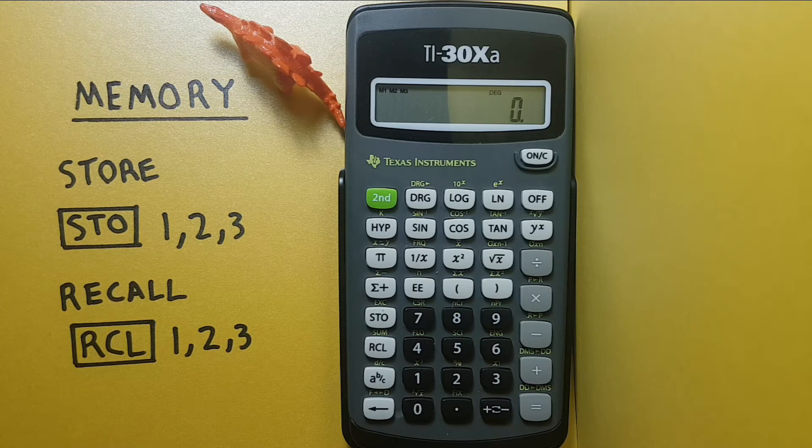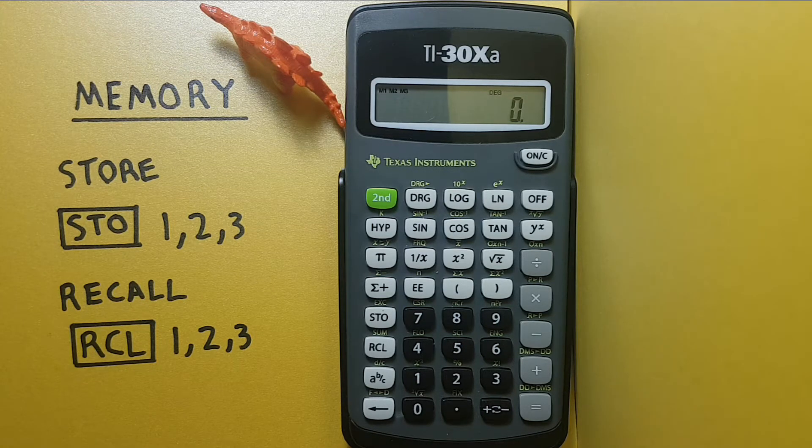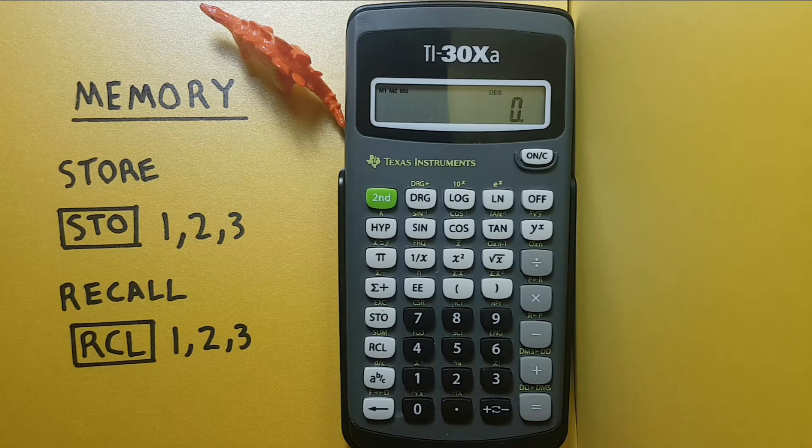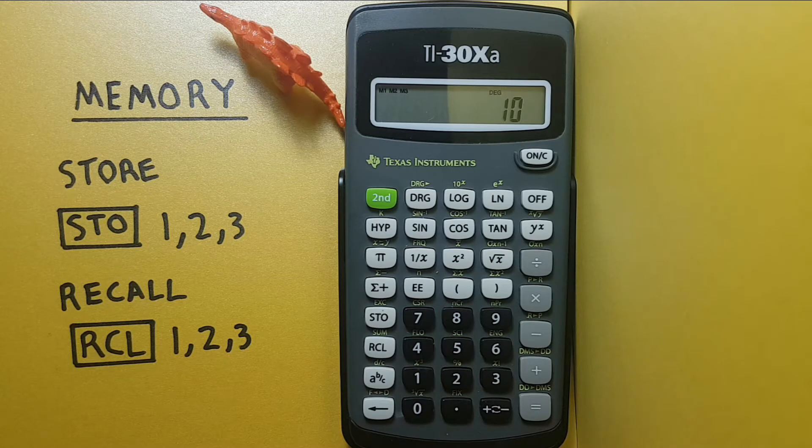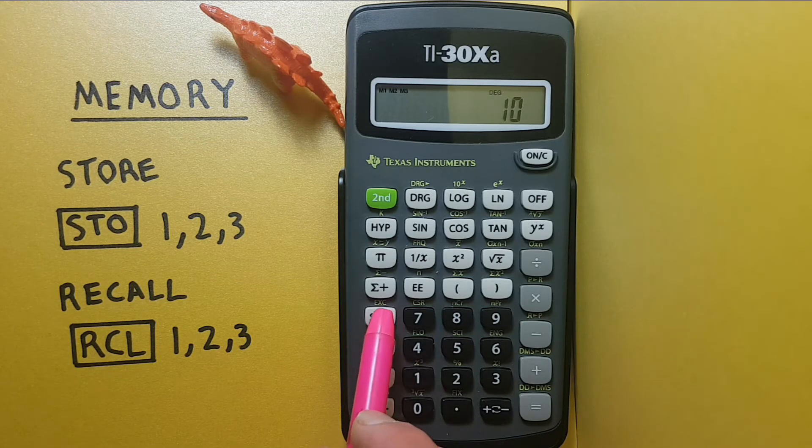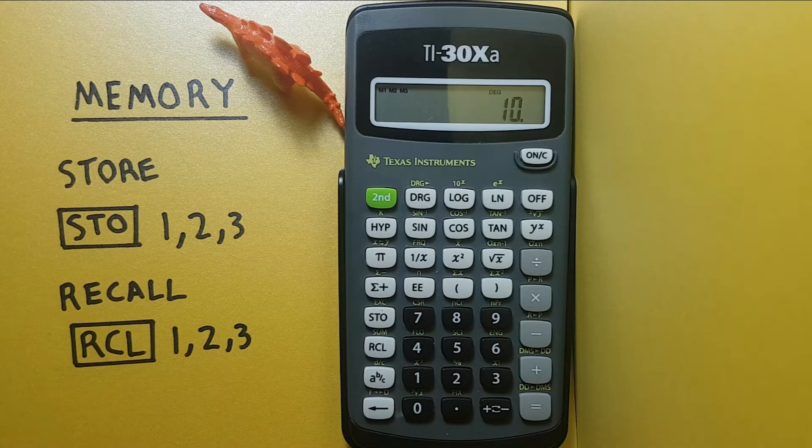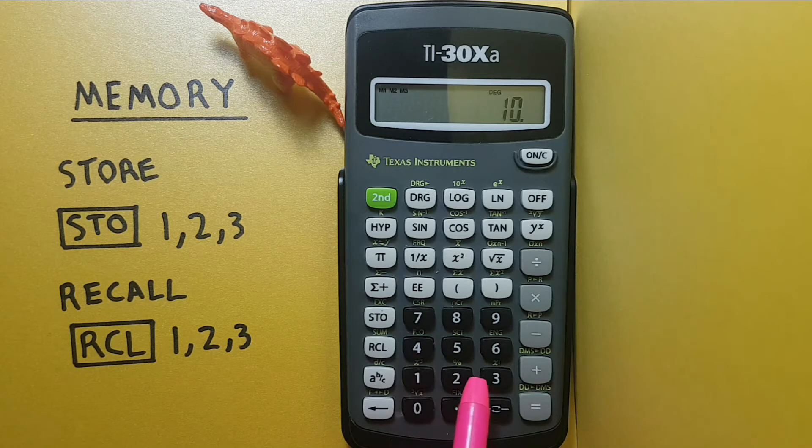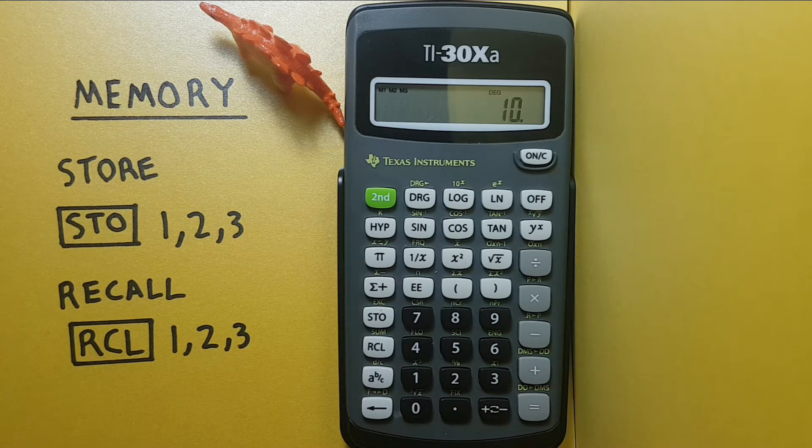If we want to store a number on our calculator for later use, we can do so by entering it onto the stack. Let's use 10, pressing the store key and then choosing between one, two, and three memory slots to store this number. We'll store it in the one.